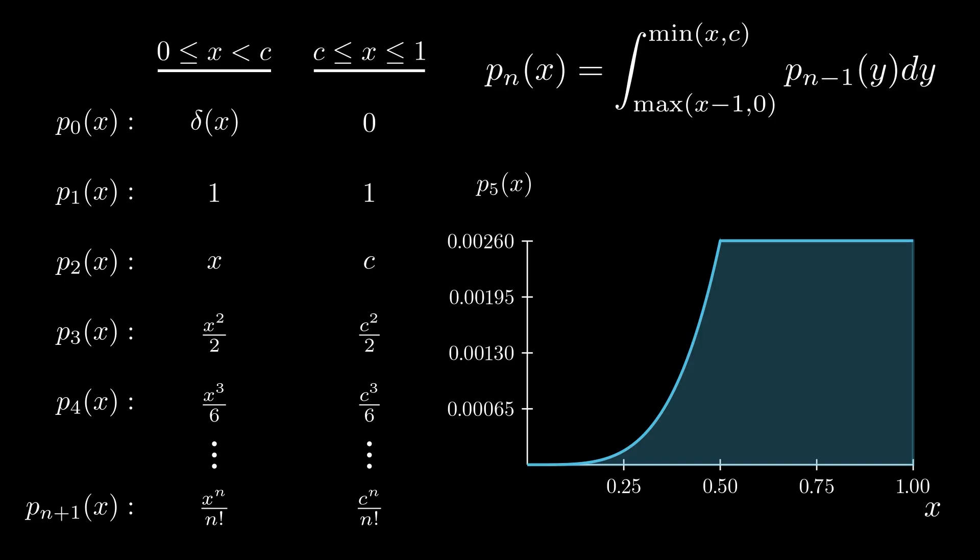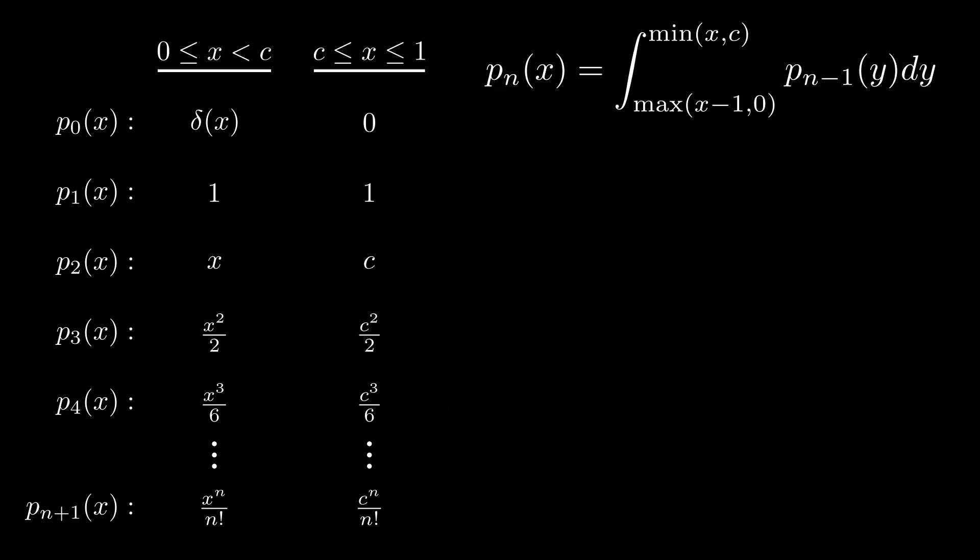With this expression in hand, we can calculate the probability that we jump. The total probability is just the sum of the probabilities that we jump after n runs for all n. But the probability that we jump after n runs is just the probability that we are above the cutoff after n runs. And now we simply plug in the expression we found to arrive at our final answer.